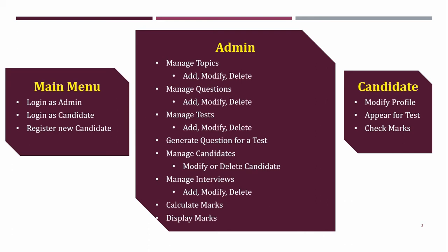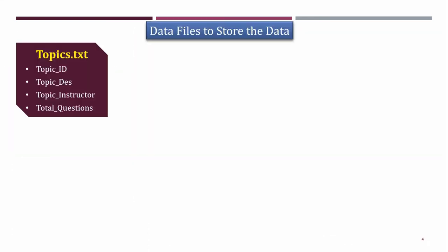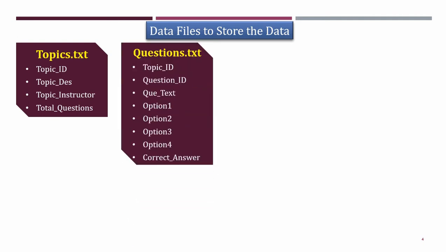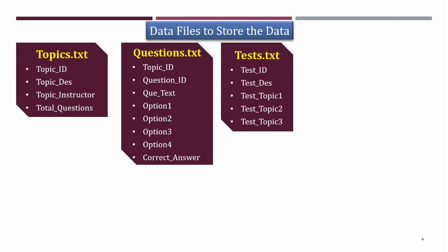To generate all the topics, questions, and tests, we need different data files. The first file is topics.txt, which stores the topic ID, topic description, topic instructor, and total number of questions for each topic. The second file is question.txt, which stores questions for each topic — including topic ID, question text, four options, and the correct answer so we can verify it against candidate answers. The third file is test.txt, which stores information about the different topics for each test — topic one, topic two, and topic three.